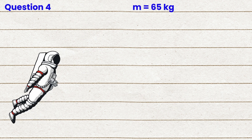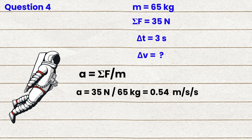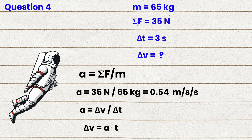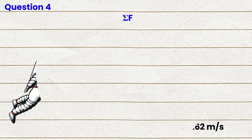Question 4. Mole, who is an astronaut of mass 65 kilograms, experiences a net force of 35 newtons from her jetpack. After 3 seconds, what is her change in velocity? A equals net force over mass, so acceleration equals 35 newtons divided by 65 kilograms, which equals 0.54 meters per second per second. To find the change in velocity, delta V equals acceleration times time, so delta V equals 0.54 times 3 seconds, which equals 1.62 meters per second.